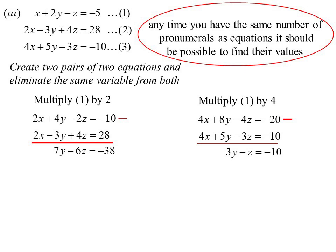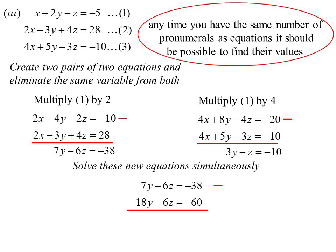I now have two equations, but I have two equations, two pronumerals, simultaneous equations. I'll go again. So now I've got 7y minus 6z, but I'll multiply the other one by three. So 18y minus 6z. I can now get rid of the z's. We know what y is.